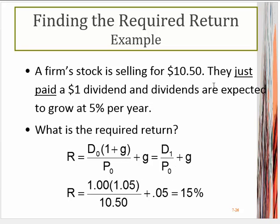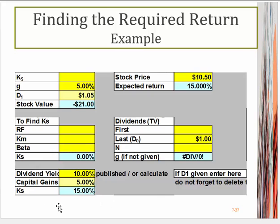Plugging into our formula: D1 — they just paid a dollar and it grows at 5%, so D1 will be $1.05. The current price is $10.50. That calculation gives us our dividend yield. Add that to the growth rate we expect moving forward, which is 0.05. So that is an easy way to figure out what the required return should be on a stock.